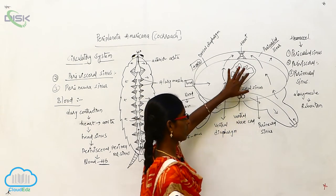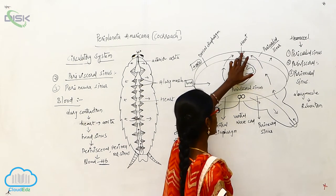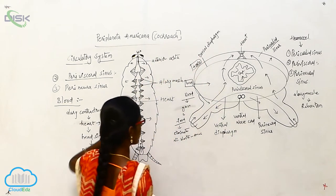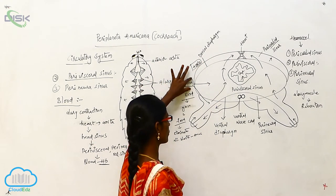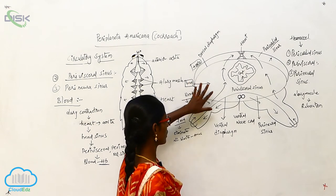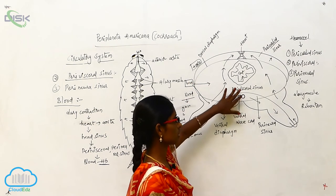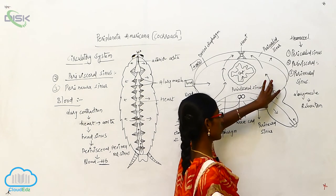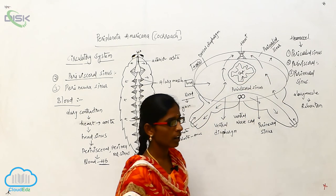On contraction of the alary muscles, blood flows from the heart to the aorta, then to the head sinus, and then to the perivisceral sinus and perineural sinus. On relaxation of the alary muscles, the blood returns to the heart again.